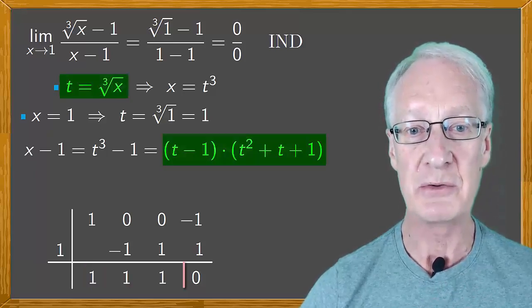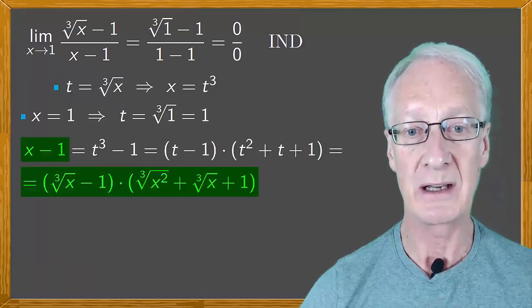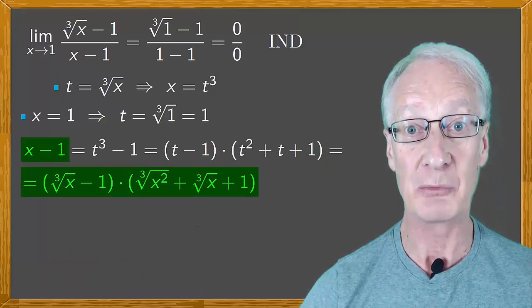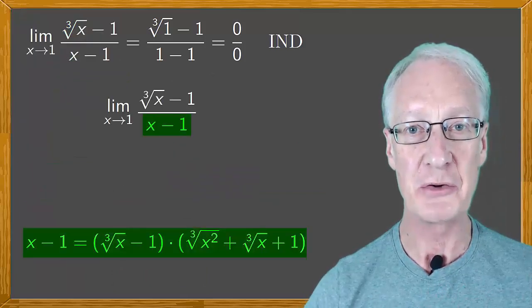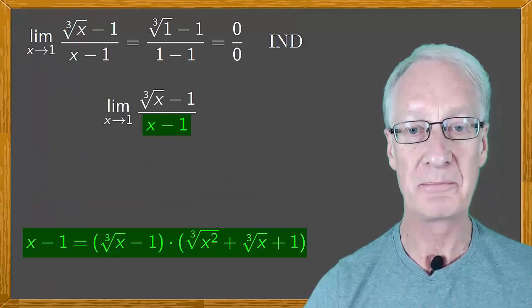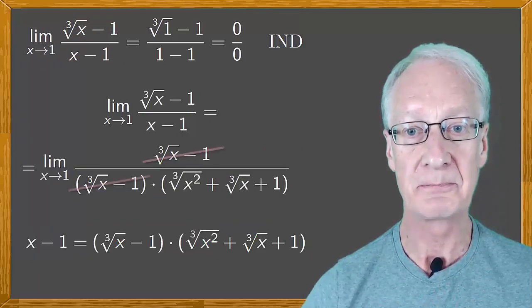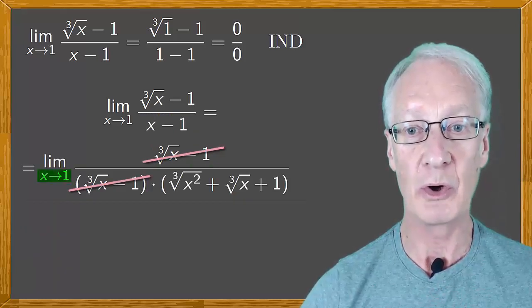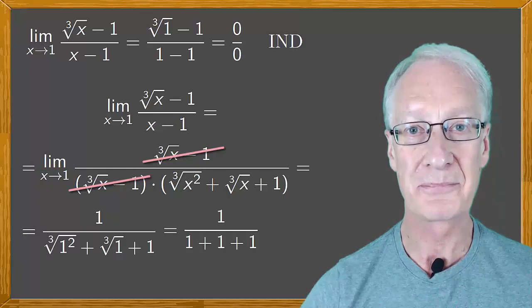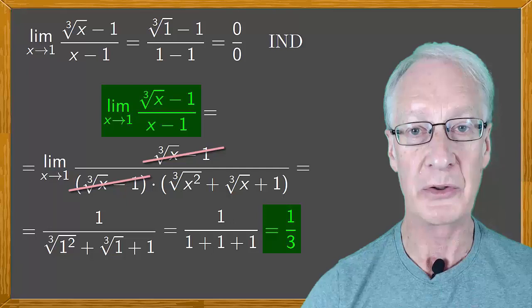So we substitute t equals the cube root of x, giving us an expression for x minus 1. If we now substitute this expression in the limit, then we can simplify the top and bottom. For continuity, we simply substitute x equals 1. And we find that the limit is 1 over 3. Fantastic.